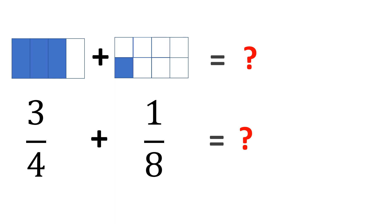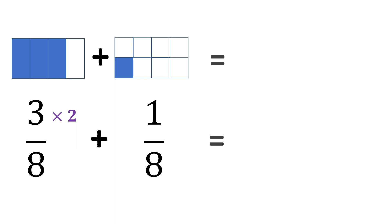Let us make it the same denominator first by multiplying by 2. So 4 times 2 becomes 8. But in fractions, whatever you multiply to the denominator, you must also apply to the numerator. So it will be 3 times 2. 4 times 2 is 8, and 3 times 2 is 6 — now it is 6 eighths. But our figure is not yet 6 eighths. If your fraction is multiplied by 2, the figure is divided by 2 instead. So now we have 6 eighths, and the two figures fit with each other.